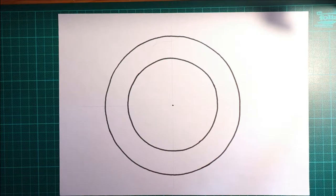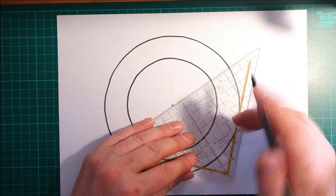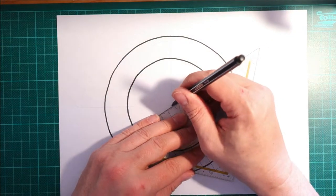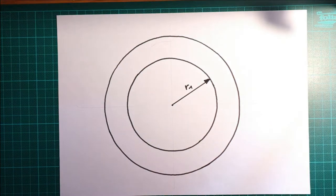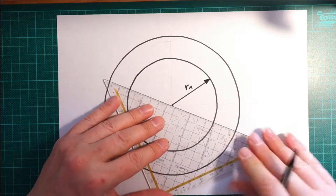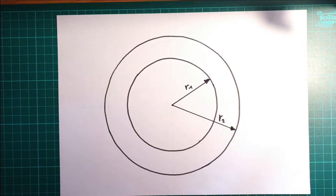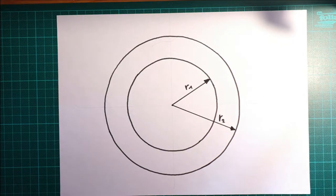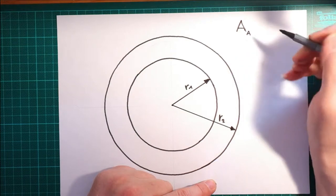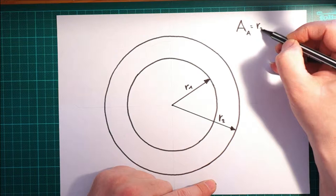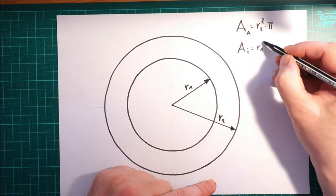dann ist das jetzt auch keine Hexerei. Weil wir senken den Radius vom inneren Kreis. Wir sehen den Radius vom äußeren Kreis. Und damit habe ich jetzt die Möglichkeit zwei Kreise zu berechnen. Nämlich den äußeren Kreis. Da schreibe ich jetzt A für außen. Das ist also R2² mal Pi. Innen R1² mal Pi.